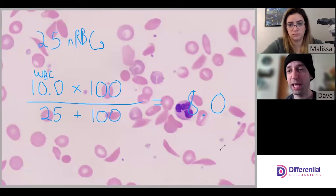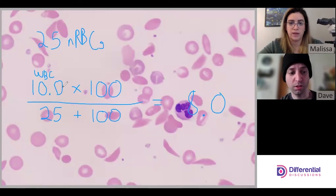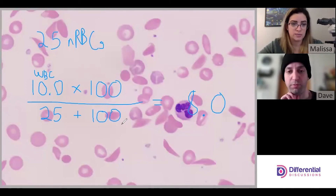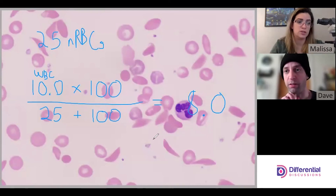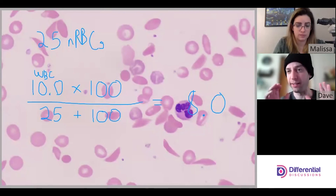If you have any questions about the math, leave a comment and we can clear it up. It doesn't matter if you do 100 ÷ 125 × 10, or 10 × 100 ÷ 125 — it's basic math. The important thing is to put the values in the correct spots, and to add the 25 plus 100 first — that addition should receive priority, so it would be in parentheses.